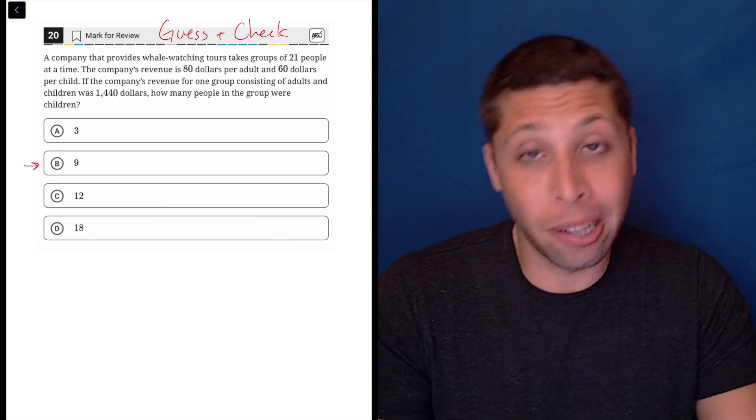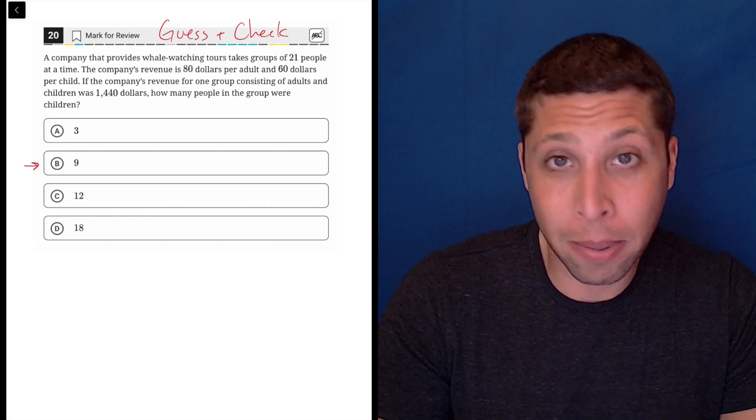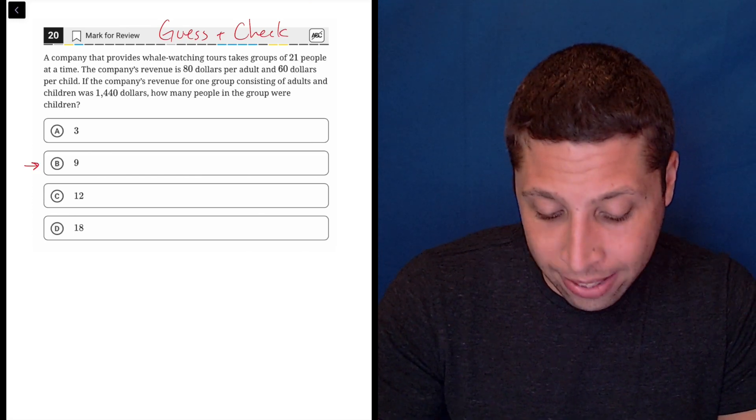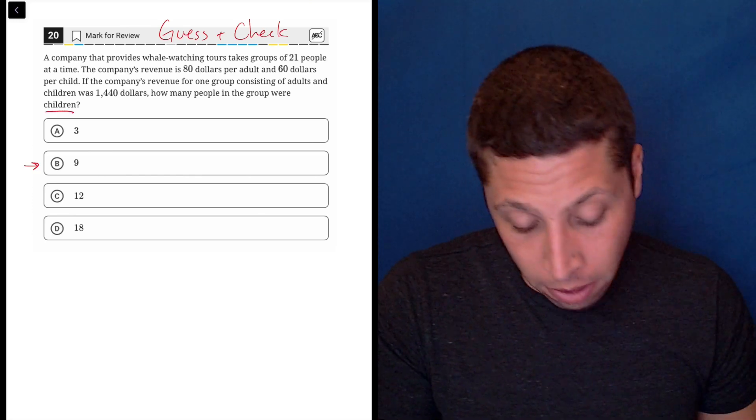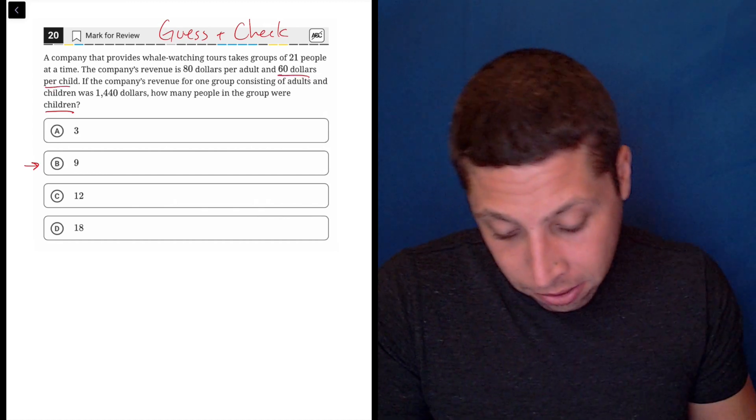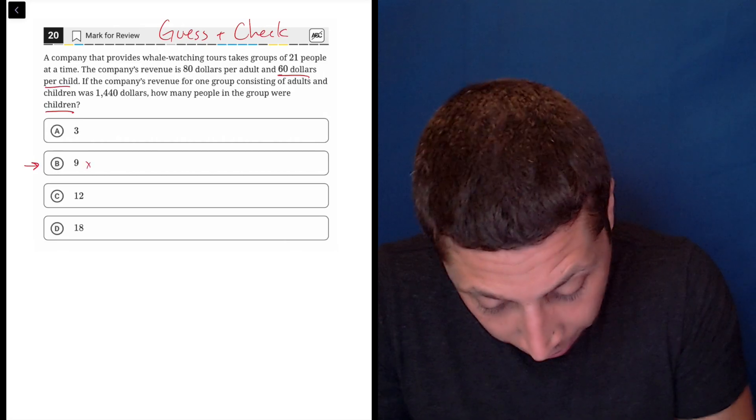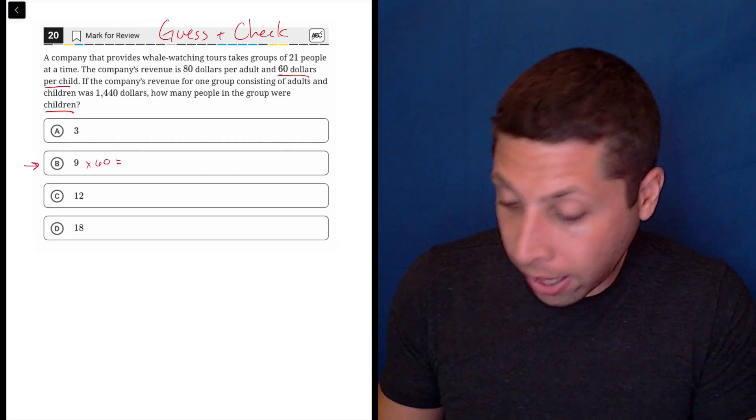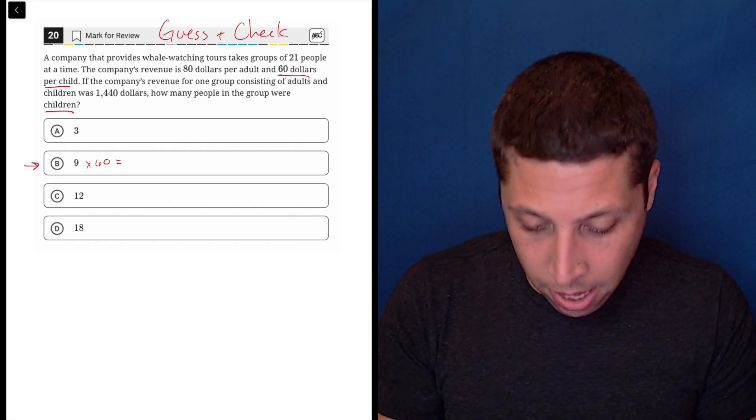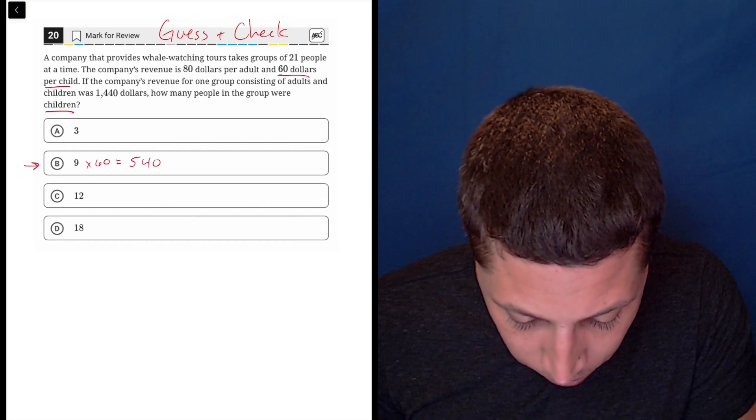So what I would do is I always like to start with B. I just find that to be kind of a nice middle number. And I'm going to say, okay, what does nine mean? That's the number of children. What do I know about the children? The children are $60 a piece. So nine times 60, I can put that in my calculator, nine times 60 is 540. So what?